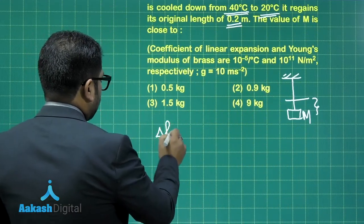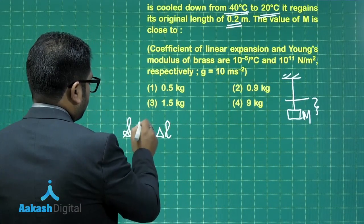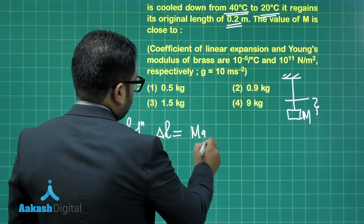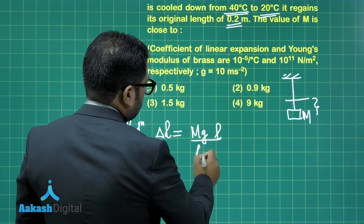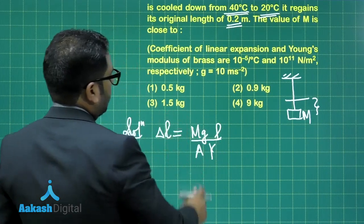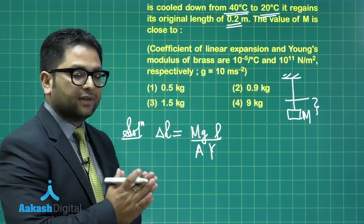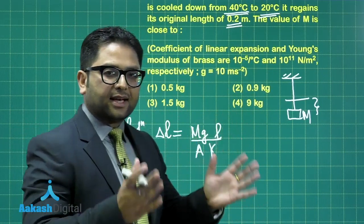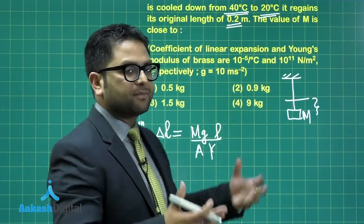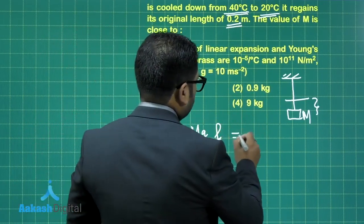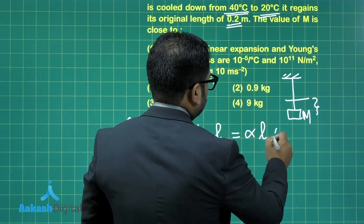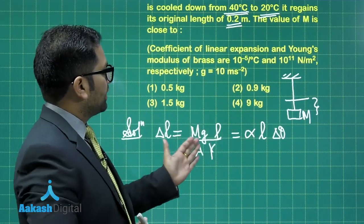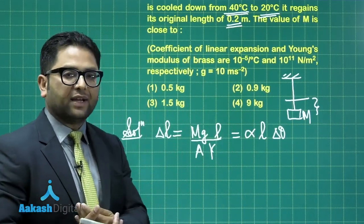That would be quite simple. Let's talk about the elongation created by this. Delta L would be equals to MgL upon AY. L is the original length, Y being the Young's modulus of elasticity. MgL is the external load, and this is the elongation produced by the load. This has to be equals to the contraction created by the temperature drop. You just need to equate it and you would be getting the value of M.